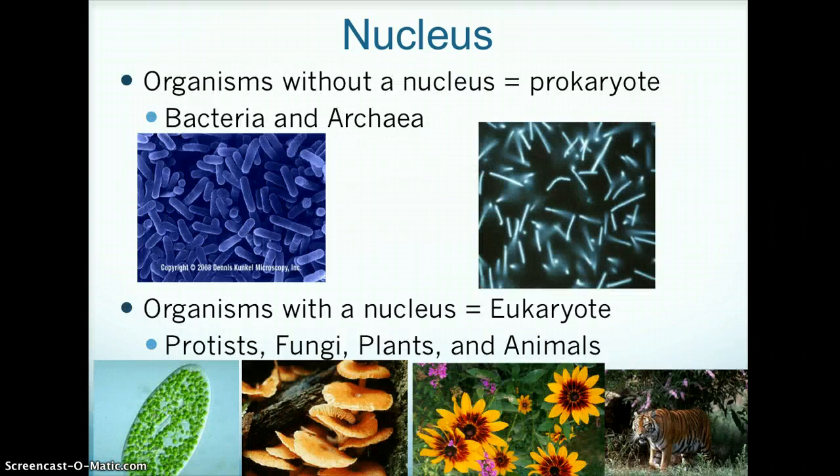Organisms that do not have a nucleus are called prokaryotes. The kingdom eubacteria, which contains the domain bacteria, and the kingdom archaea, contain prokaryotes.